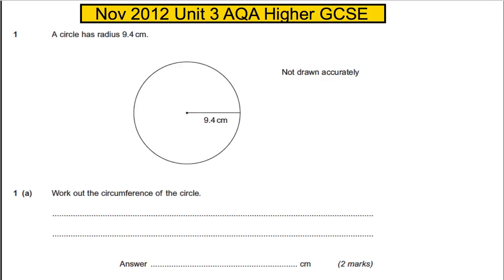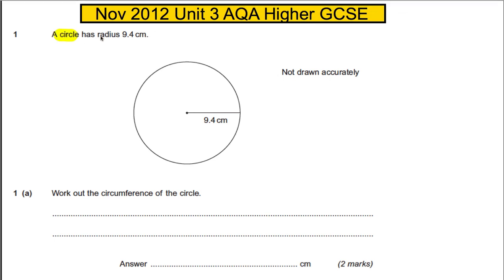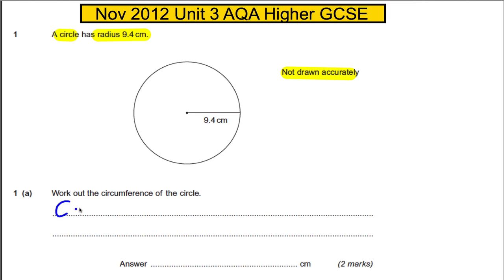This is question one of the November paper. We're given a circle with radius 9.4 centimeters and asked to work out the circumference. The formula you should know is: circumference equals 2πr — 2 times pi times the radius.